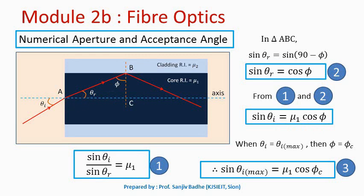In the diagram, if we increase angle theta_i, then phi will reduce. As theta_i increases to a maximum value called theta_i_max, phi will become equal to phi_c, the critical angle of incidence at the core-cladding boundary. If theta_i is increased further, phi becomes less than phi_c and internal reflection will not occur. Therefore, for internal reflection (phi > phi_c), theta_i must be less than theta_i_max. When theta_i = theta_i_max, phi = phi_c, giving equation 3: sin(theta_i_max) = mu_1 · cos(phi_c). This theta_i_max is the acceptance angle.